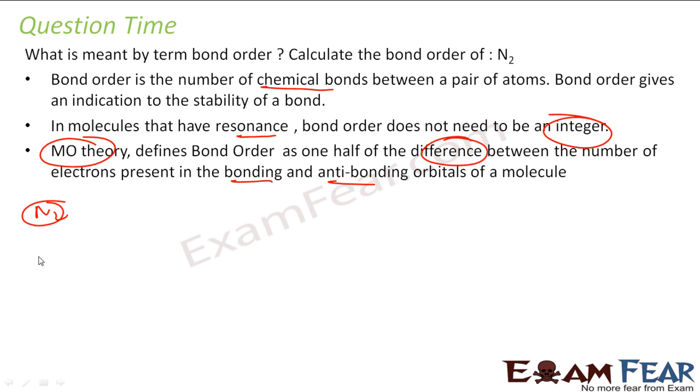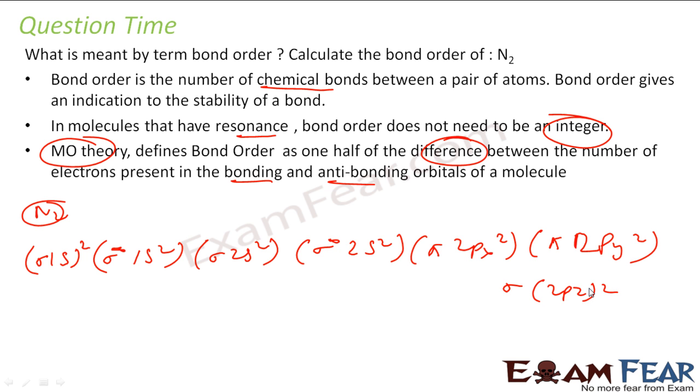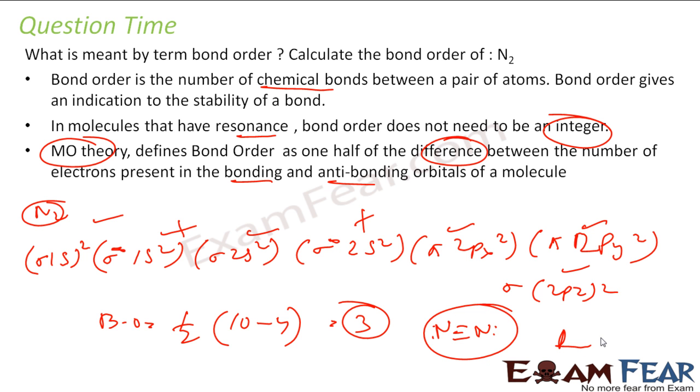So let us find the bond order for N2 using molecular orbital theory. For N2, this will be sigma 1s2, antibonding sigma star 1s2, sigma 2s2, antibonding sigma star 2s2, pi 2px, pi 2py, and sigma 2pz. So bond order will be one-half bonding minus antibonding. Bonding is 2, 4, 6, 8, 10. 10 minus antibonding is 4. This becomes 3. So bond order for N2 is 3. So we see N2 has triple bond. That's that.